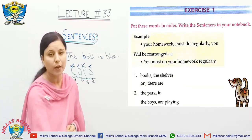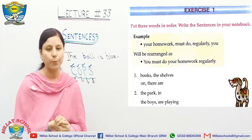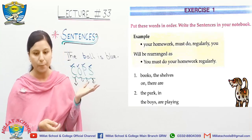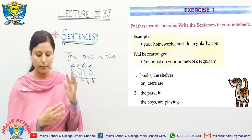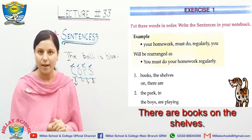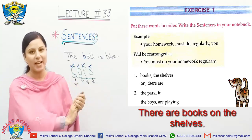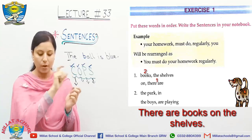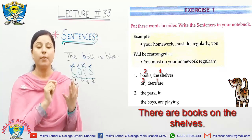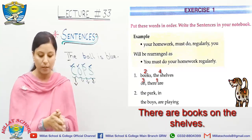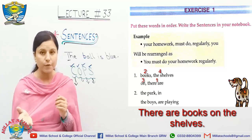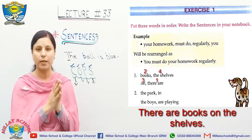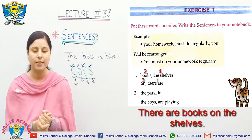Let's move to page number 187. Some words have been given to you in a jumbled way — mixed together — and we have to put them in proper order using the rules. Number one: 'books the shelves on there are.' The correct order is: 'There are books on the shelves.' 'There are books' is your subject, 'on' is your preposition, and 'the shelves' is your object.